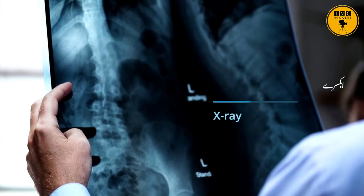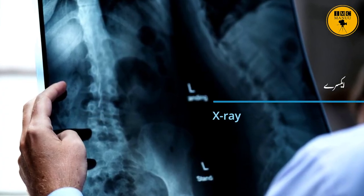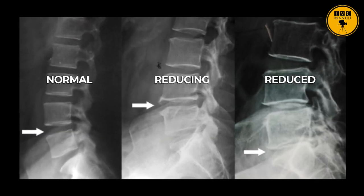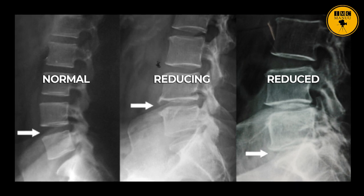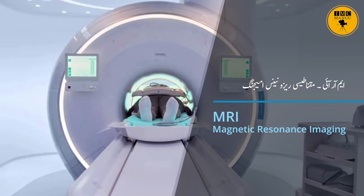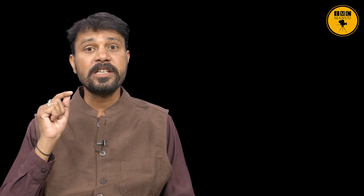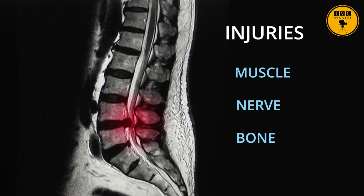There are two types of investigations: medical and self-investigation. For medical investigation, the common one is X-ray, which shows the vertebral column spacing and how the bones are positioned. If nerve injury is also suspected, MRI — Magnetic Resonance Imaging — is used. MRI shows the entire picture of muscle injuries, nerve injuries, and bone injuries. This is the deepest investigation.